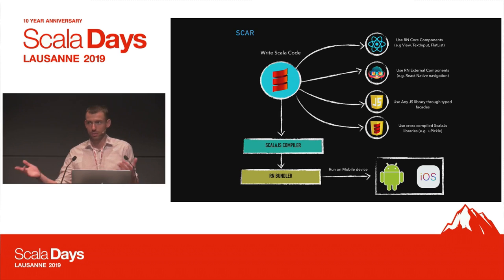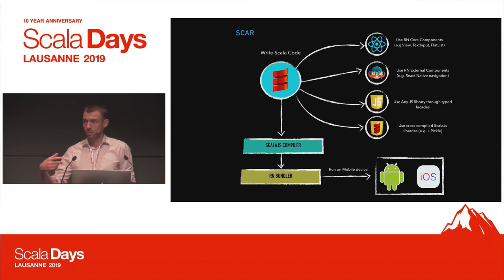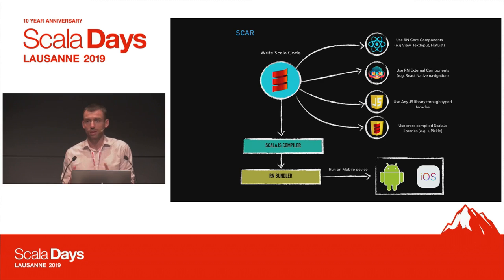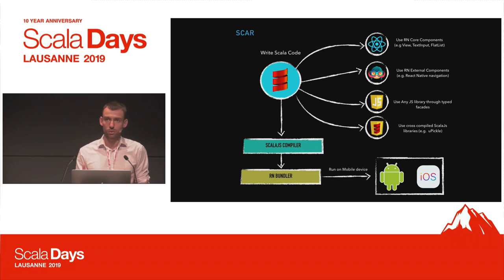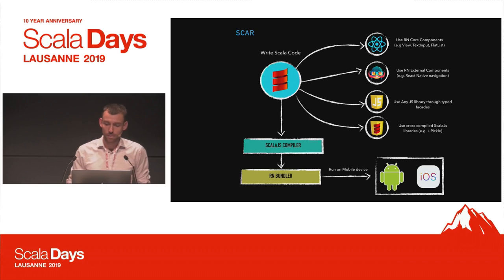When you write some Scala code, you have a few options: use React Native core components such as Text and FlatList for which we've provided facades; pull in external React Native components that you write facades for; pull in any JavaScript library that you write facades for. And what's probably even better is that you can cross-compile libraries with Scala.js — for example, uPickle and µTest, which you can use both on your mobile client and on your server because they are cross-compiled. All your code goes through the Scala.js compiler, then the React Native bundler picks it up, bundles it, and runs it on your device.